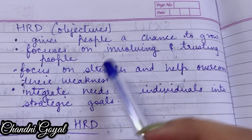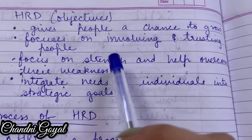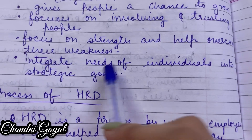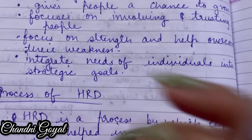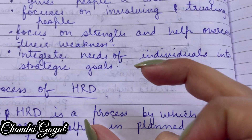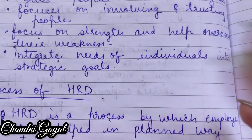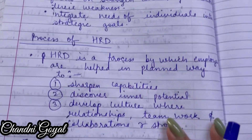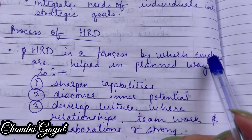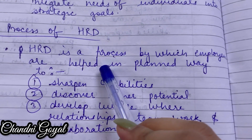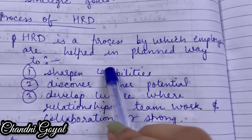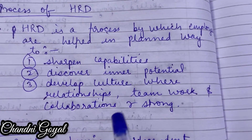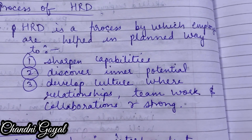HRM logo ko chance deta hai grow karne ka, logo pe trust karna sikhata hai, kaise involved rehna sabke saath, us pe focus karta hai. Strength pe focus karta hai logo ke, aur weakness ko thik karne mein help karta hai. Integrate needs of individuals into strategic goals — individuals ki jo personal goals hain unko strategic goals ke saath mix karne ki koshish karta hai, taaki dono ke goals ek saath poore hote jayein. HRM ka process aisa hai jisme employees ki help ki jati hai.